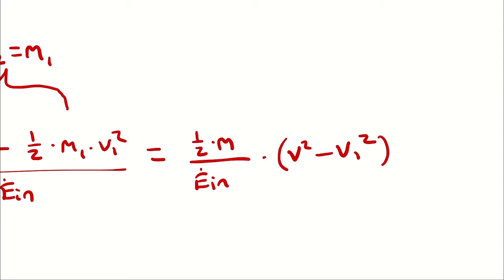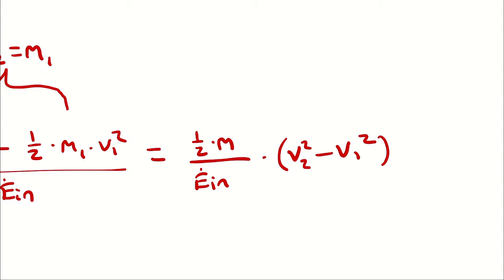A very common mistake among Thermal 1 students is to simplify V2 squared minus V1 squared as the quantity V2 minus V1 squared — but that's not true. V2 squared minus V1 squared is not the same as the quantity V2 minus V1 squared. We have E dot in, V2, and V1. Since V1 was 0 — the car started from rest and accelerated to 60 miles per hour — we can eliminate V1 altogether.